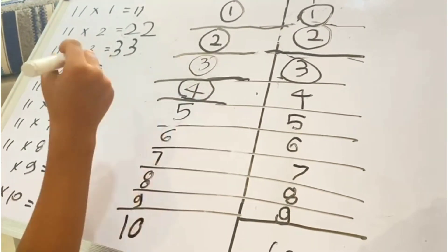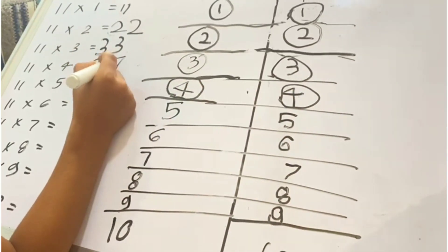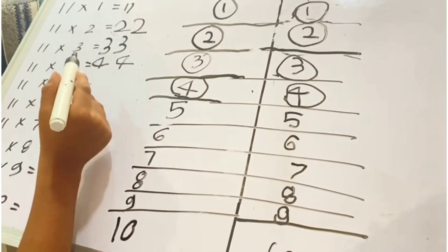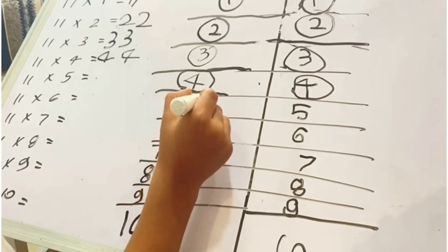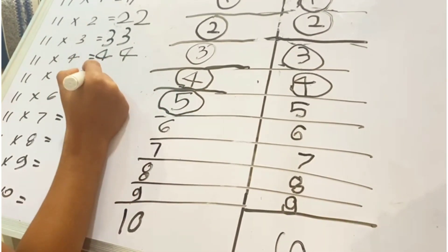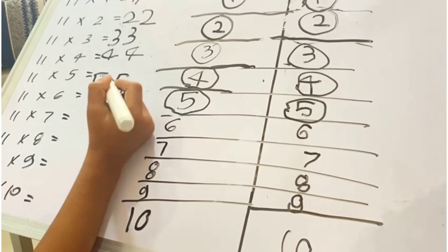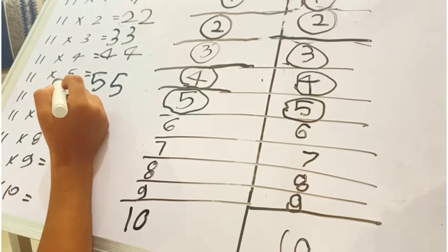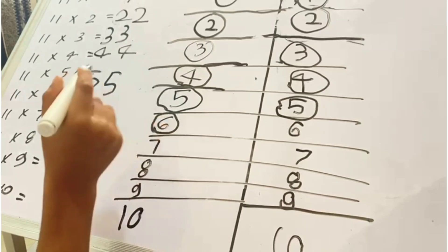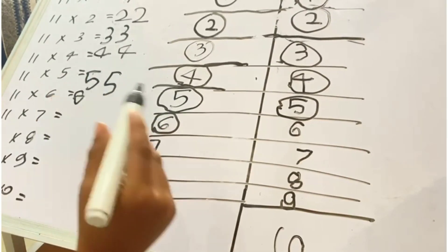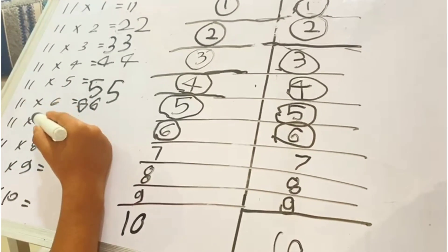This 4 right here, this 4 right here. Then four, the 44. This 5 right here. Then five, the 55. This 6 right here, this 6 right here. Then six, the 66.